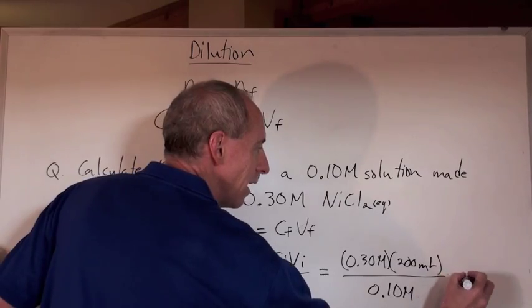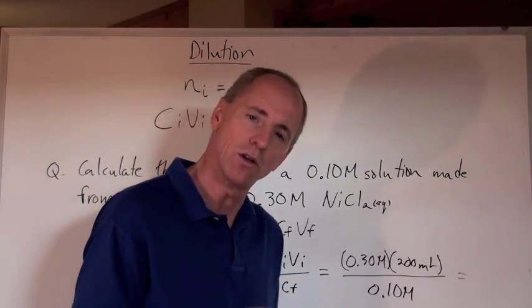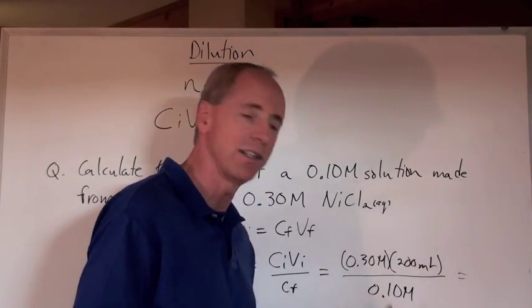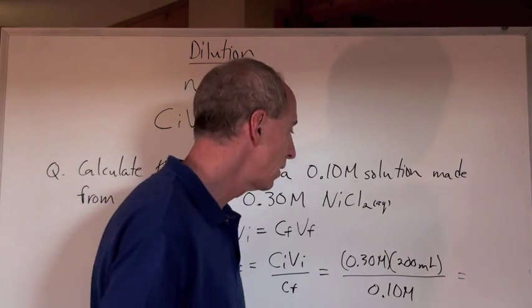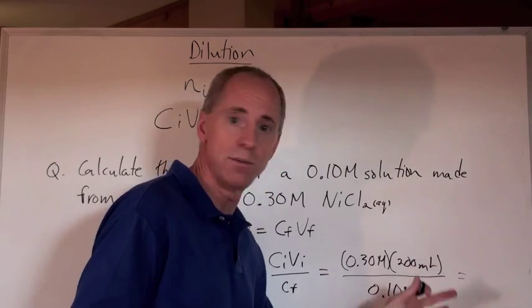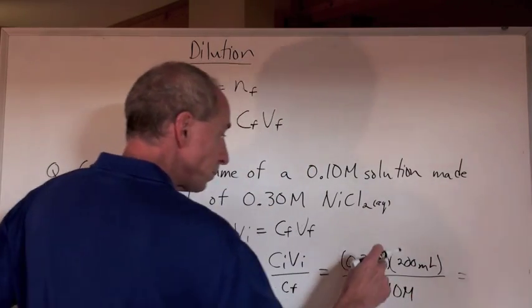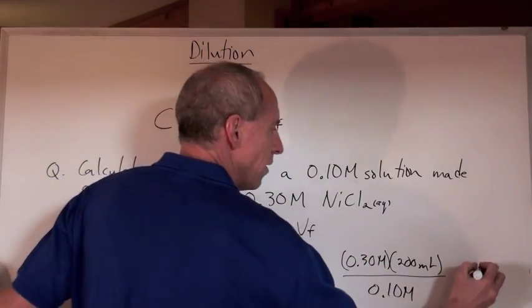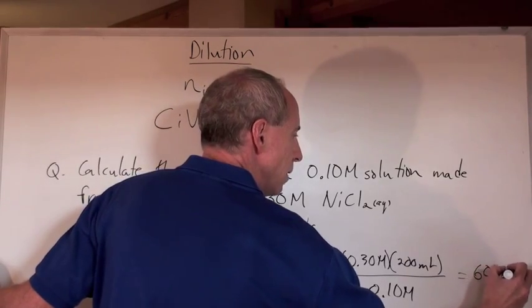The big M's cancel, and you're going to be left with milliliters. That's all. So don't freak out. It's okay. As long as your units are consistent here, you'll be all right. So, of course, if that was in liters, the answer's going to be in liters. You'll understand that. So, when you multiply those two and divide by that, you get 600 milliliters.